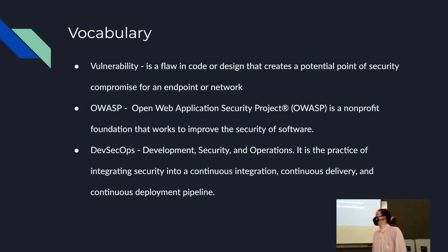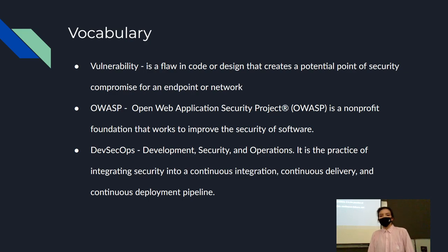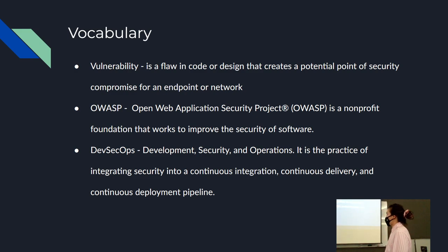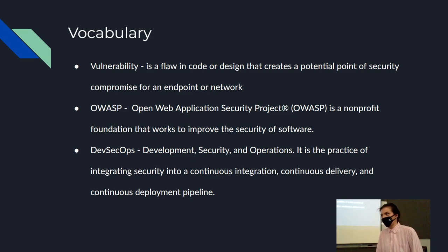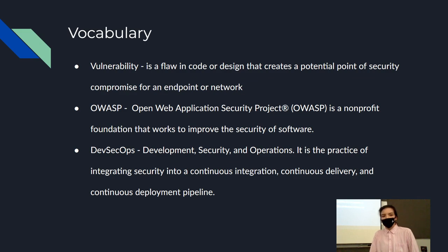This is basic vocabulary for those who are new to cybersecurity. A vulnerability is basically a flaw in code or design that can create a potential point of weakness for compromise. OWASP is the Open Web Application Security Project — it's a nonprofit with chapters around the world. DevSecOps — development, security, and operations — is basically a practice of integrating security into all stages of the software development life cycle.